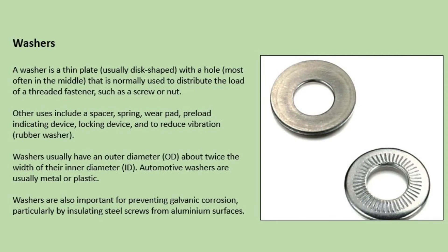Washer. A washer is a thin plate, usually disc shaped, with a hole most often in the middle, that is normally used to distribute the load of threaded fasteners such as a screw or nut. Other uses include a spacer, spring, wear pad, preload indicating device, locking device and to reduce vibration. Washers usually have an edge diameter about twice the width of their inner diameter. Automotive washers are usually metal or plastic. Washers are also important for preventing galvanic corrosion, particularly by insulating steel screws from aluminium surfaces.